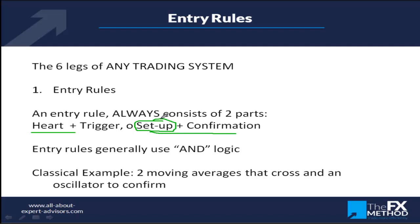I use this example: if you want to hunt elephants, you should be in Botswana, not Siberia. If you want to hunt bears, you should be in Siberia. The setup is: are we in the right market conditions and timing? The trigger is when we actually see the elephant in Botswana — then we can fire. These are two distinct parts, and in code we use AND logic: we are in Botswana AND we see an elephant. It's rare to find a trading system using OR logic in entry rules.